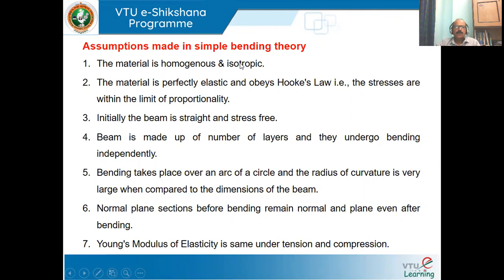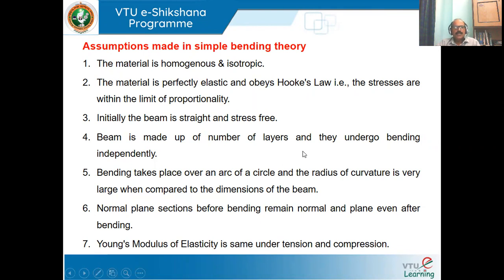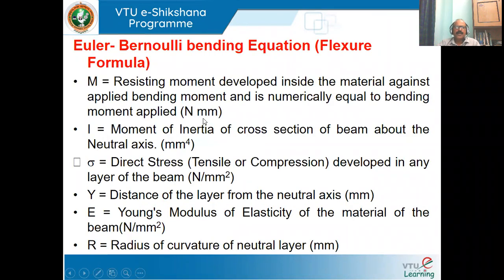The material is perfectly elastic and obeys Hooke's law, meaning the material is loaded within the elastic limit. The beam is initially straight and is not under any type of stress. The beam is made up of a number of layers and each layer bends independently — each layer is independent of one another. Bending takes place over an arc of a circle and the radius of curvature is very large compared to the dimensions of the beam. Normal plane sections before bending remain normal and plane even after bending. Young's modulus is the same in tension and compression.